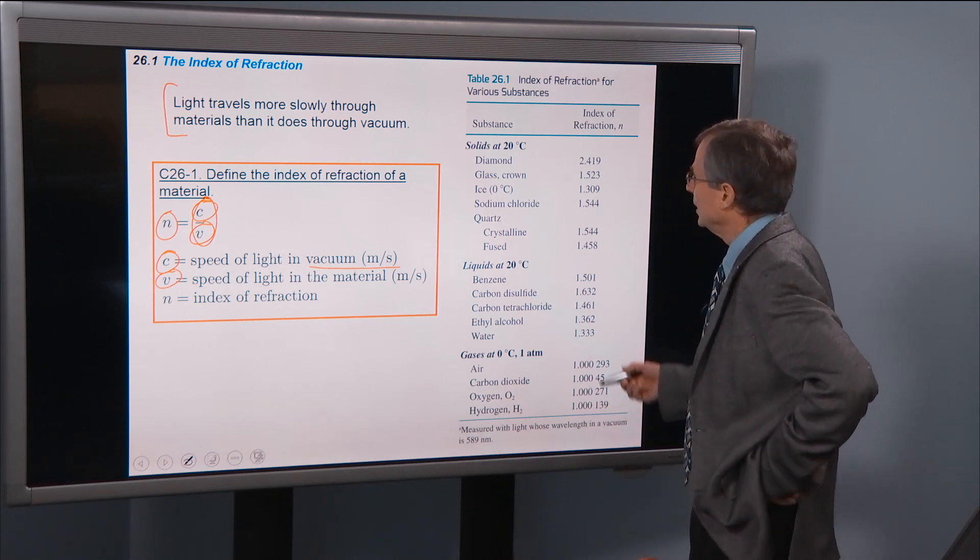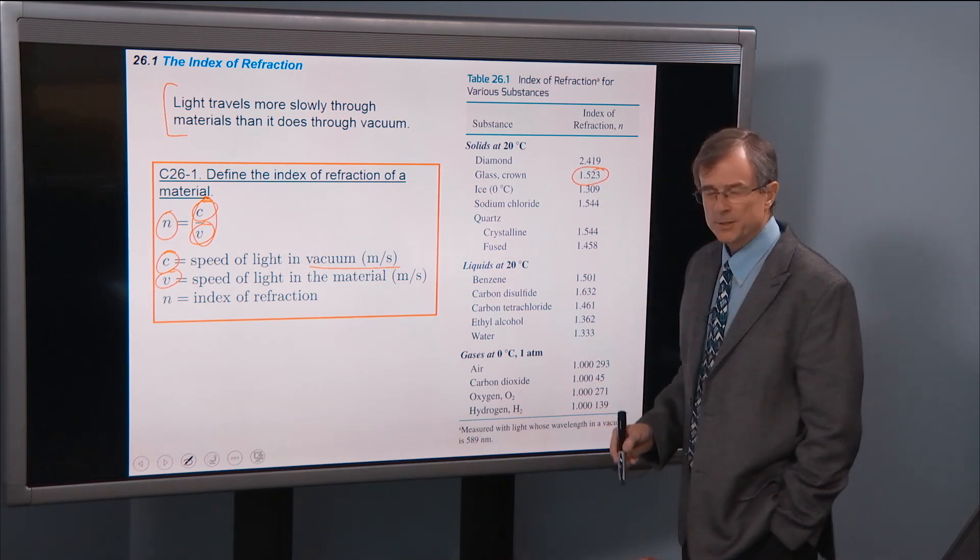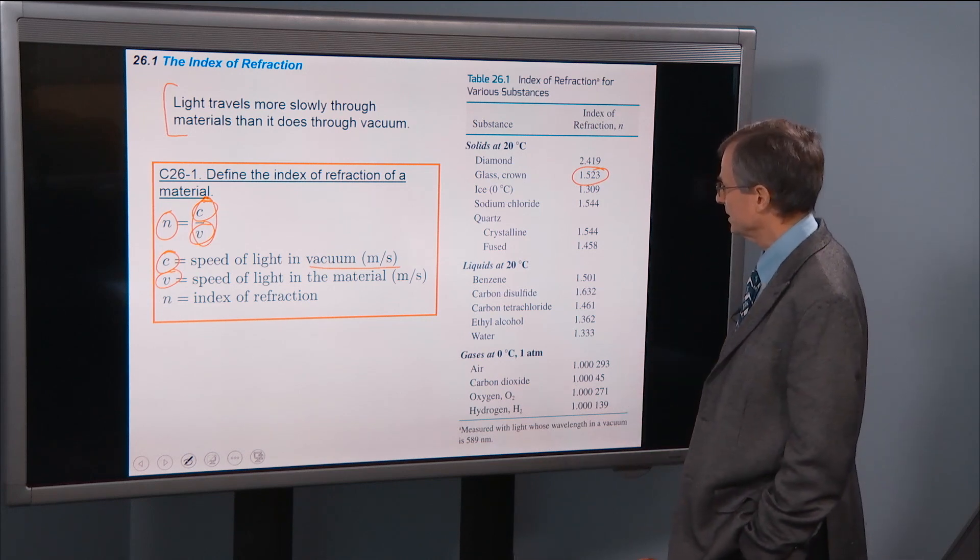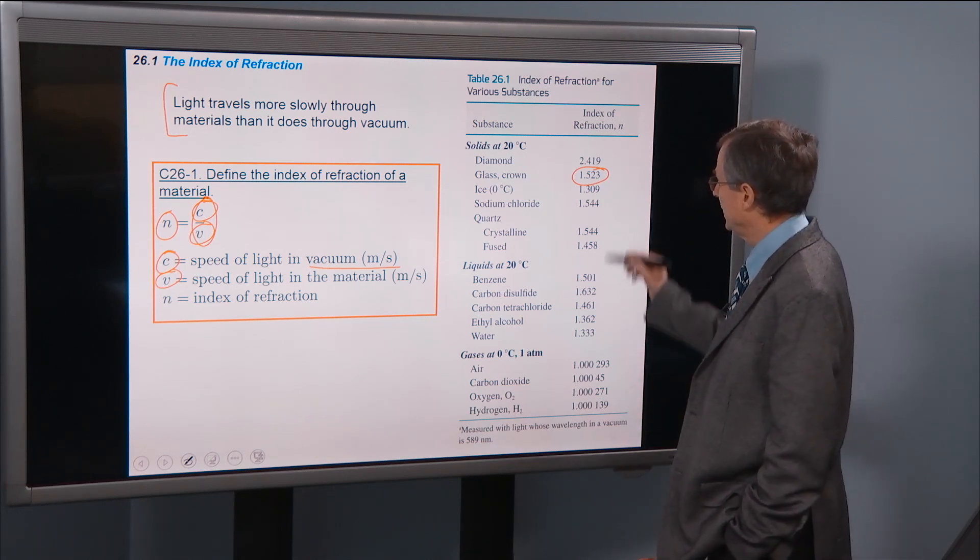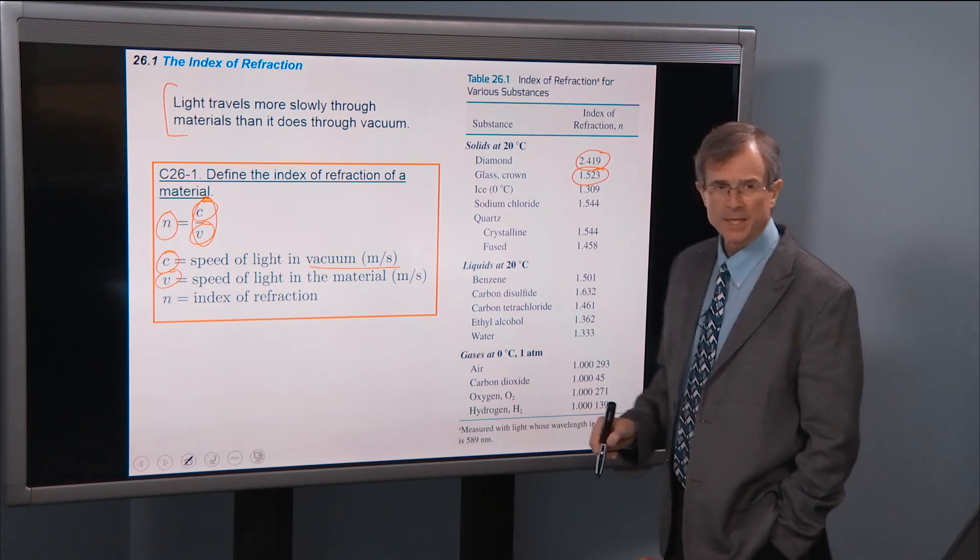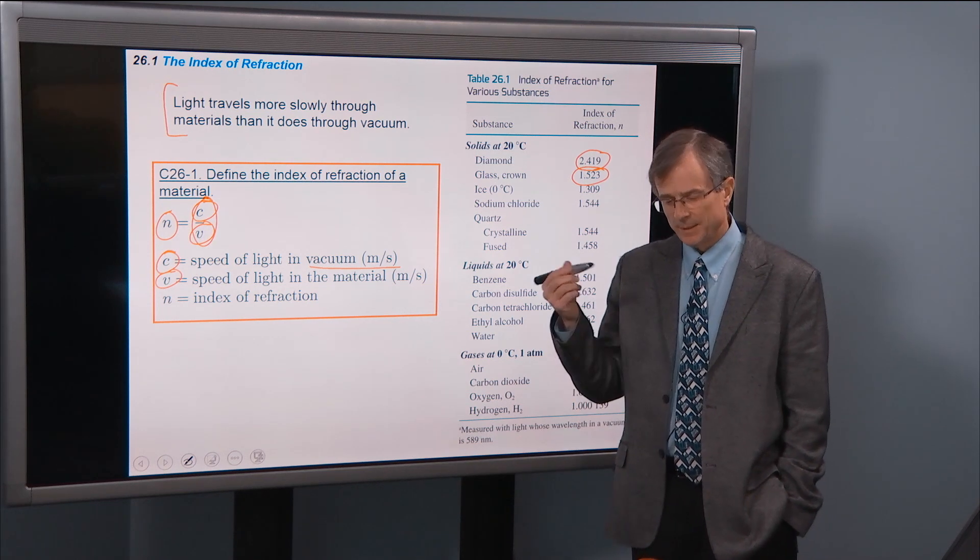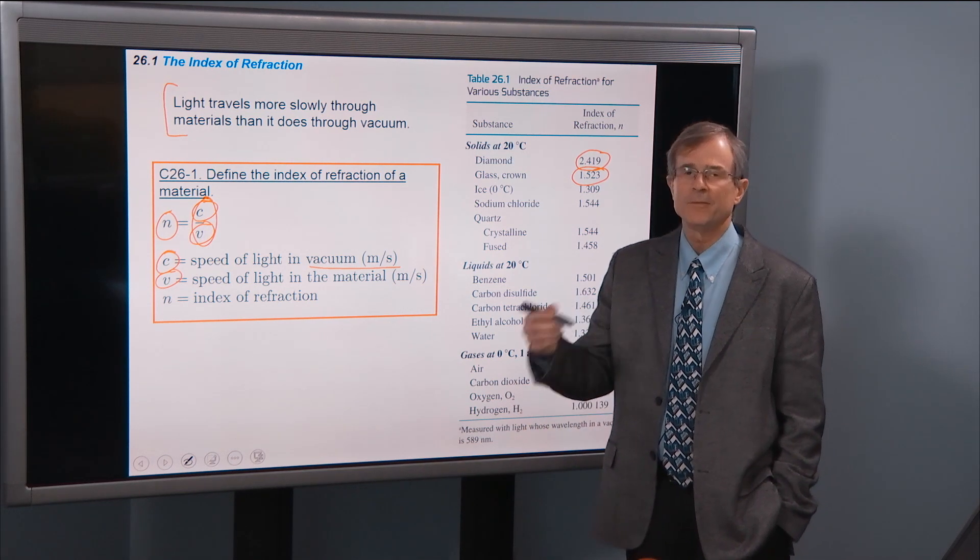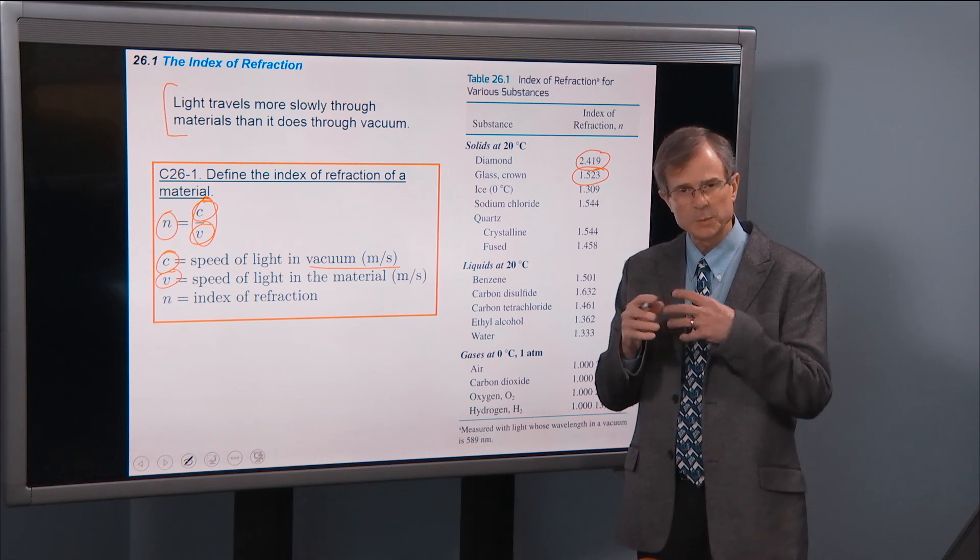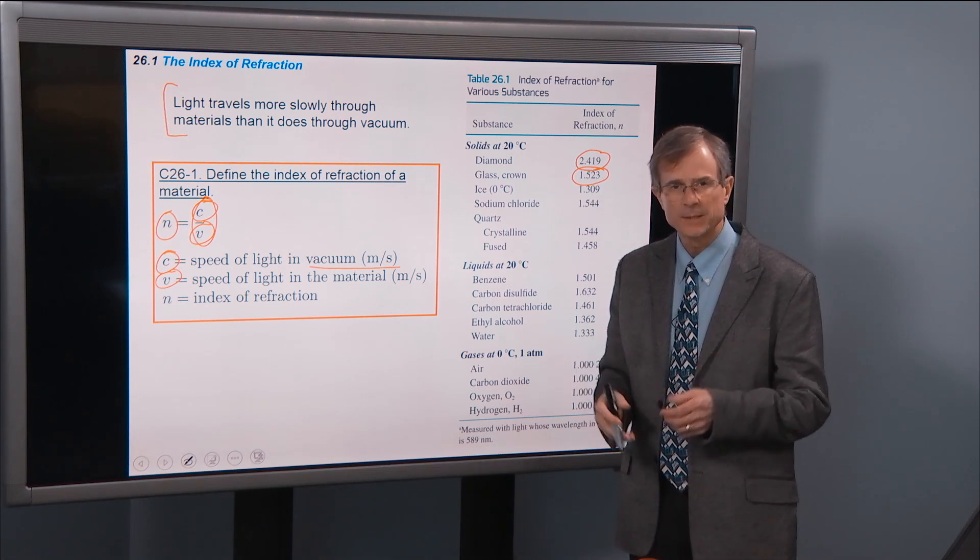Let's take a look. Crown glass has an index of refraction of 1.5 plus a couple of decimal points. Diamond has a very high index of refraction and we'll talk about later how we can take advantage of that to make the beautiful sparkling diamonds, why this is important.